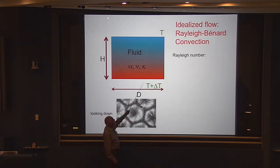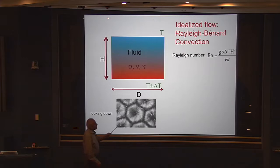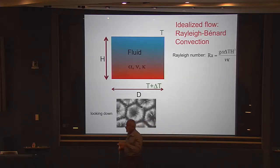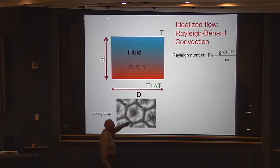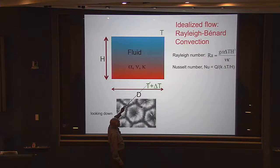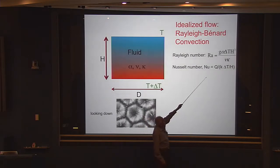I normalize delta T through other properties of the fluid — this is the so-called Rayleigh number. When I say Rayleigh number, it's a measure of the temperature difference between the top and bottom, or in the sun's case, between the beginning of the convection region and the top of it. The heat being transported is measured by the Nusselt number — the amount of heat transported, normalized in a certain way.